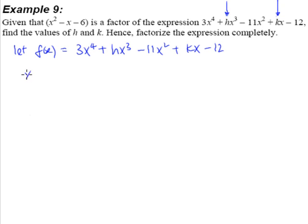And since we know that x squared minus x minus 6 is a factor, we also realize that x squared minus x minus 6 can be factorized to become x minus 3 and x plus 2.